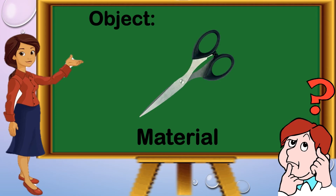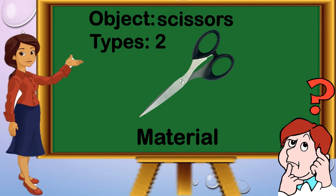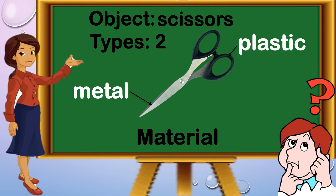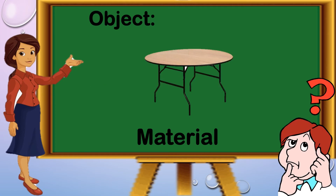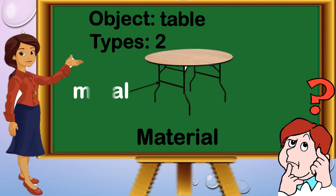Next, we have scissors or a pair of scissors. There are two types. First, we have metal. Second, the handle is made up of plastic. This pair of scissors is made up of metal and plastic. Another material is table, and it is made up of two types: metal and wood.